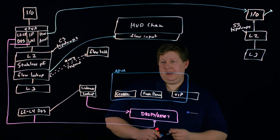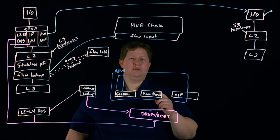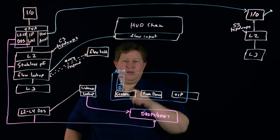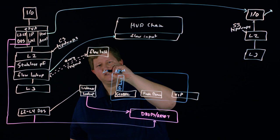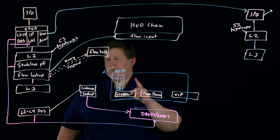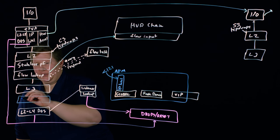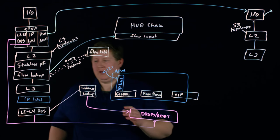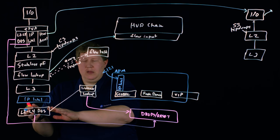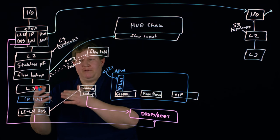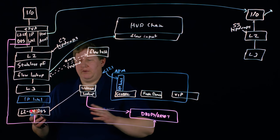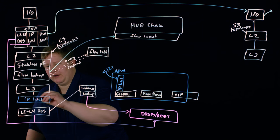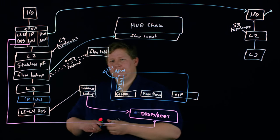The update here: within the global context, before 12.1 you had IP intelligence sitting there. Beginning in 12.1, IP intelligence actually moves earlier in the chain. The reason that's a great update is because we can protect the L2 through L4 software DoS by inserting IP intelligence before it — eliminating the need for the L2 through L4 DoS to do all the heavy lifting if IP intelligence is going to block it anyway. So this is 12.1-plus behavior versus pre-12.1.